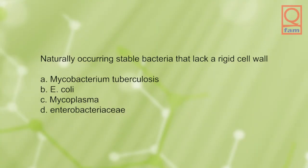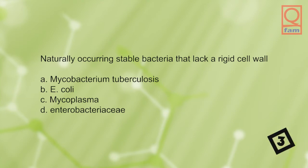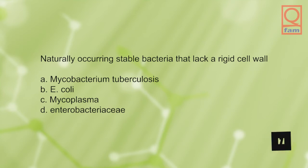Naturally occurring stable bacteria that lack a rigid cell wall: A) Mycobacterium tuberculosis, B) E. coli, C) mycoplasma, D) enterobacteria. The answer is C, mycoplasma.